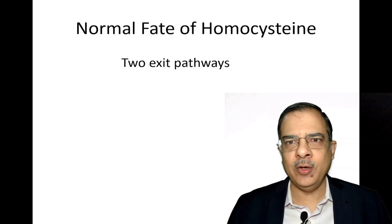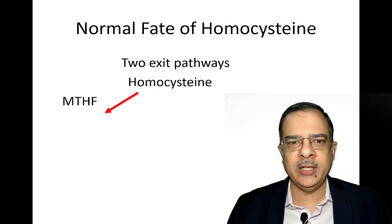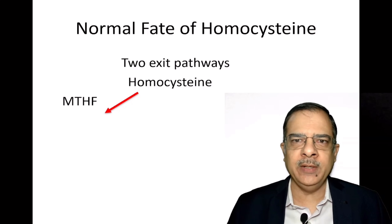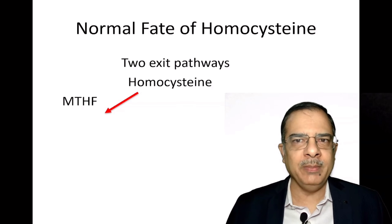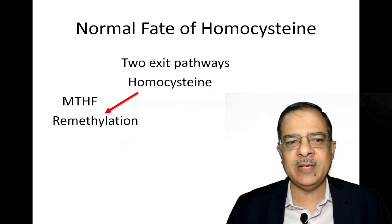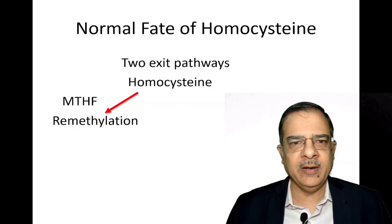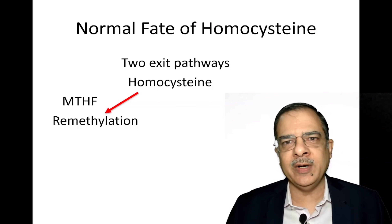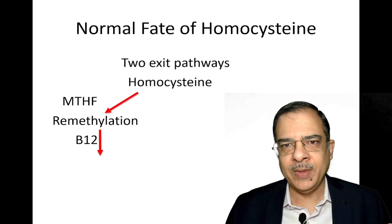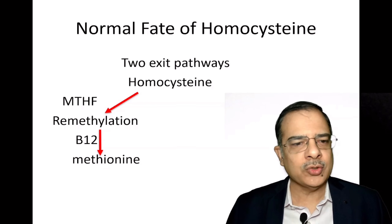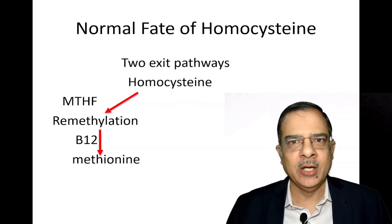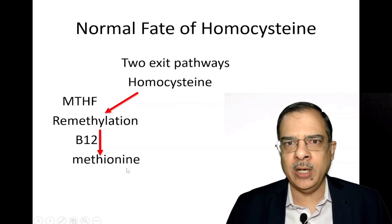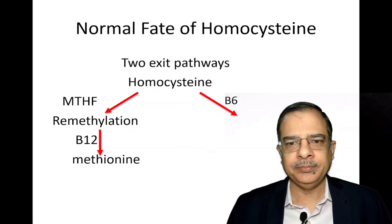There are two exit pathways for homocysteine. The first pathway is homocysteine being converted back into methionine, known as the remethylation process. This is done with the help of methyl-tetrahydrofolate — the methyl group of folate is taken up by homocysteine to convert into methionine, and this reaction is catalyzed by B12 methylcobalamin. So this is the first route where folic acid and B12 are needed — their deficiency will lead to high levels of homocysteine.